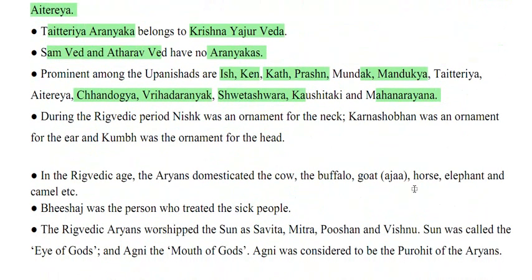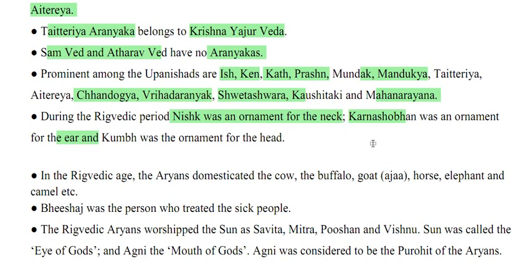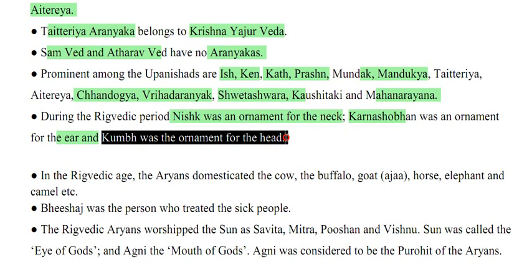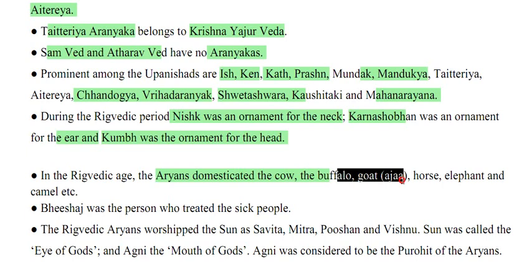During the Rigvedic period, Nisq was an ornament for the neck, Kalna Soban was an ornament for the ear, and Kumbh was the ornament for the head. In the Rigvedic age, Aryans domesticated the cow, buffalo, goat, horse, elephant and camel.